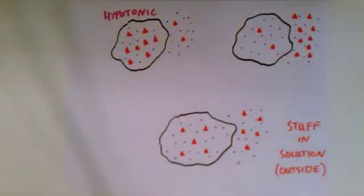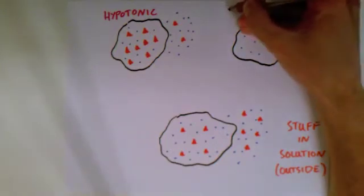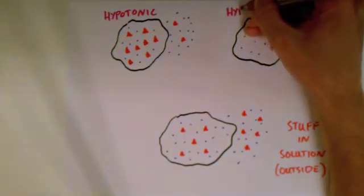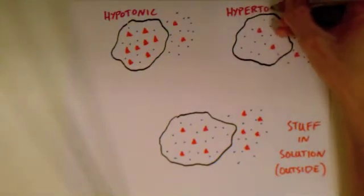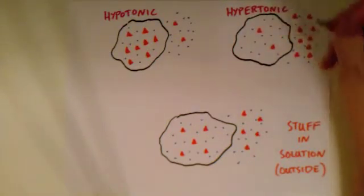In the next cell, we see that there's more stuff on the outside of the cell than there is on the inside. So we use the prefix hyper to indicate that there's more stuff on the outside. This is a hypertonic solution that the cell's in.